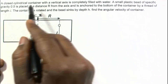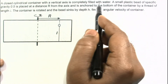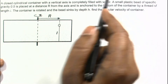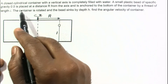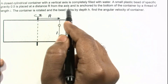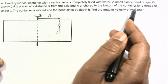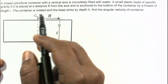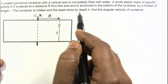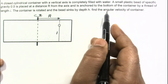In this problem, a closed cylindrical container with a vertical axis is completely filled with water. A small plastic bead of specific gravity 0.5 is placed at a distance r from the axis and is anchored to the bottom of the container by a thread of length l. The container is rotated and the bead sinks by depth h. Find the angular velocity of the container.